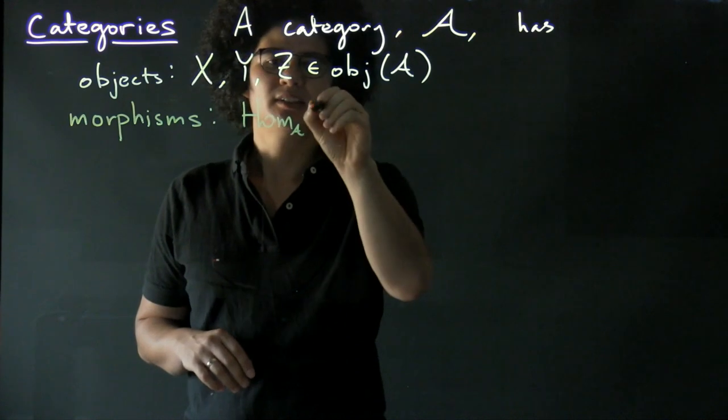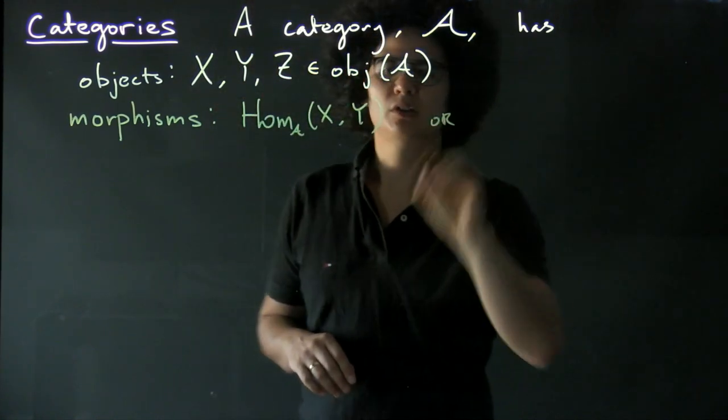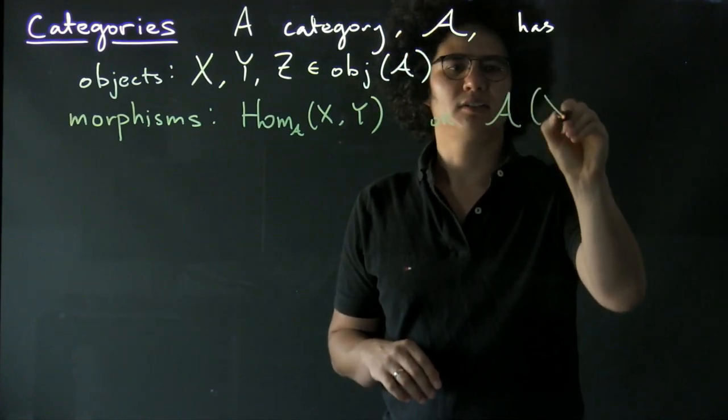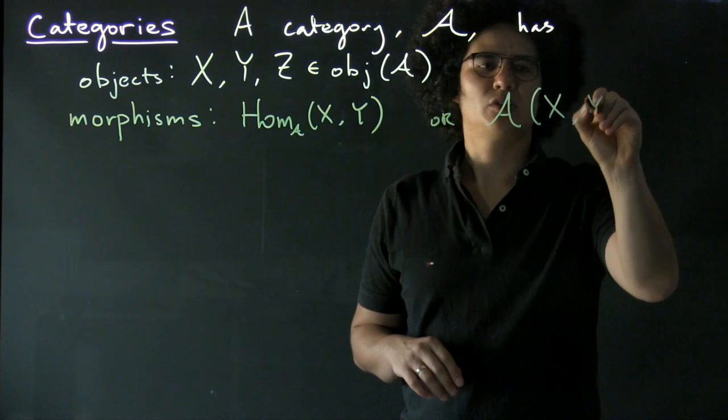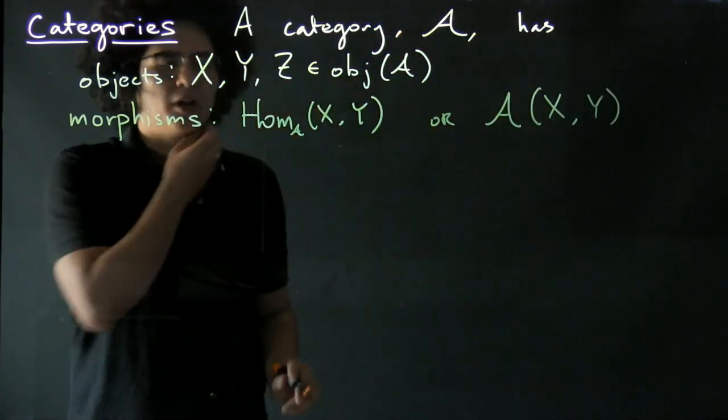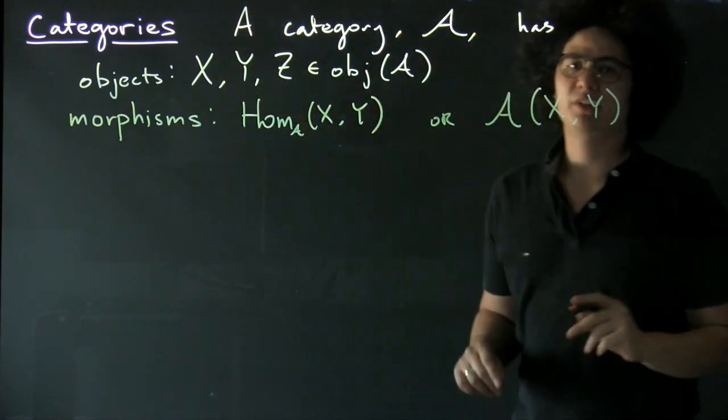We might denote the category here from X to Y, or you might see this notation. So the morphisms in the category A from X to Y. I'm going to try and stick to this notation just for brevity.